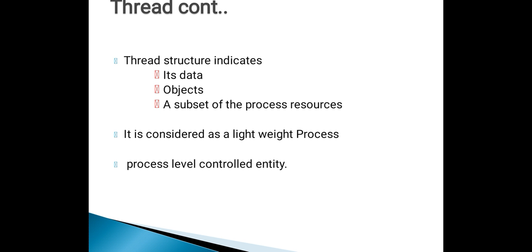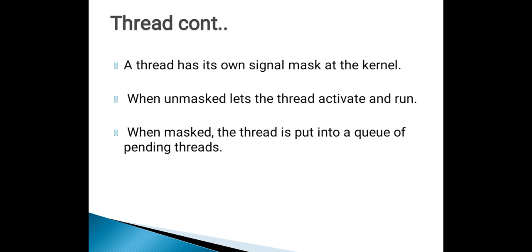A thread is also considered as a lightweight process, meaning its running does not depend on system resources. It is also a process-level controlled entity — the process can control the thread. A thread has its own signal mask at the operating system. When unmasked, the thread activates and runs. When masked, the thread is put into a queue of pending threads.